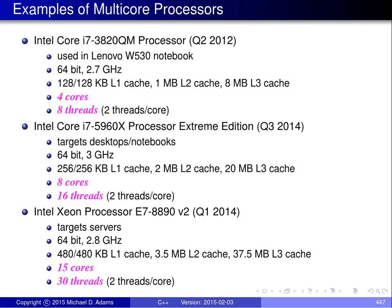Some examples of multicore processors — these three from Intel. The first, used in the Lenovo W530 notebook, is a 64-bit processor with four cores running two threads per core for eight total threads. The next targets desktops and notebooks: a 64-bit processor with eight cores running two threads per core for sixteen total threads. The Xeon processor family targets servers: a 64-bit processor with fifteen cores running two threads per core for a total of thirty threads.